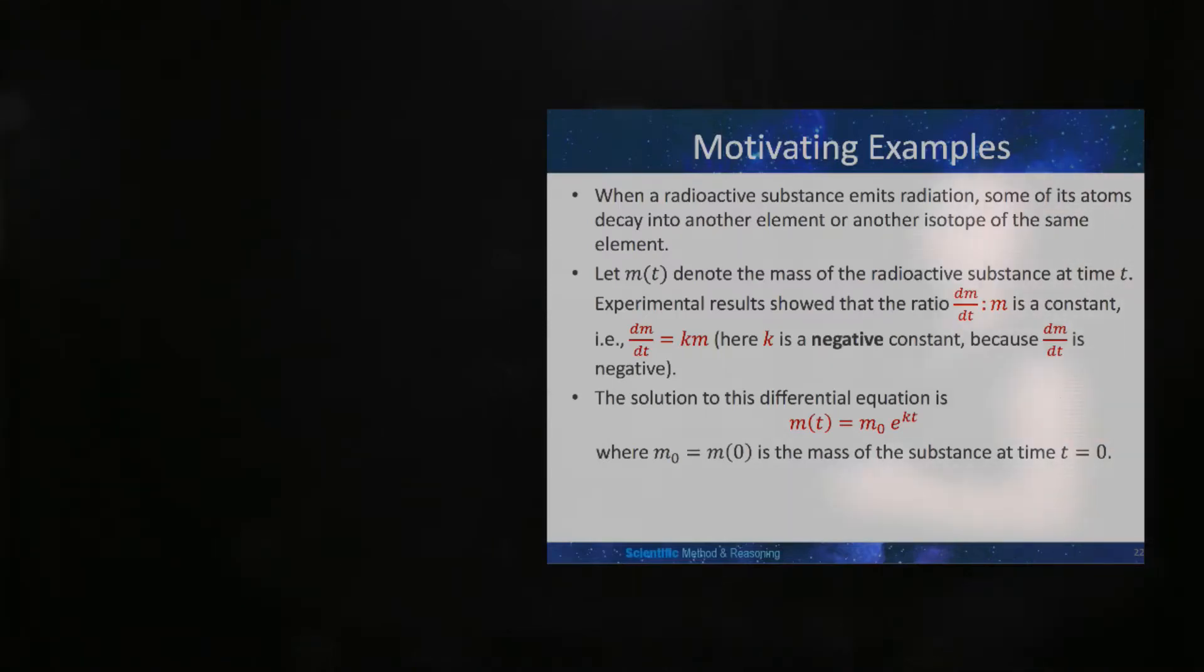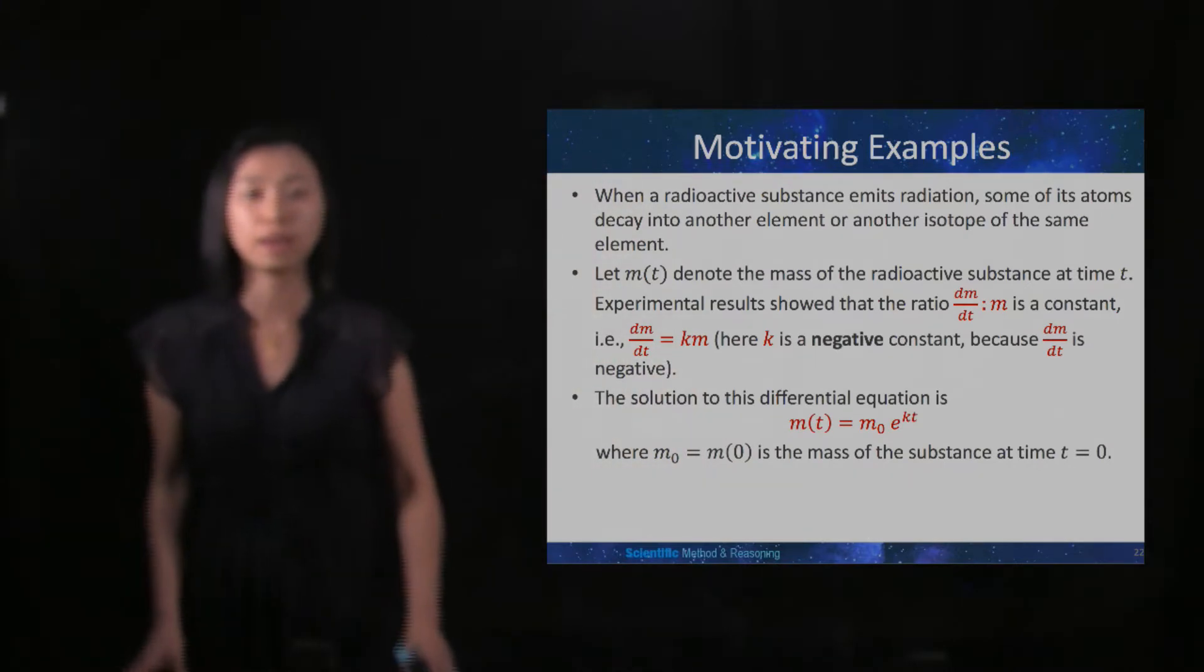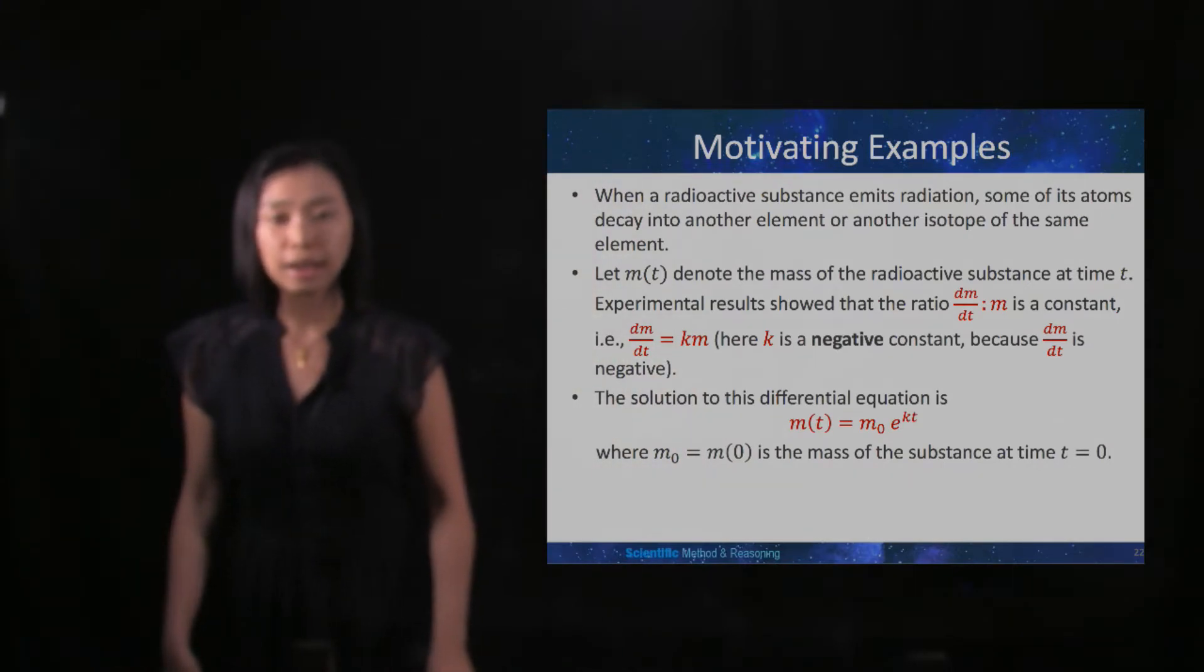When a radioactive substance emits radiation, some of its atoms decay into another element or another isotope of the same element. Let m denote the mass of the radioactive substance at time t.